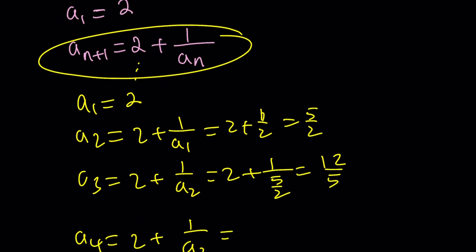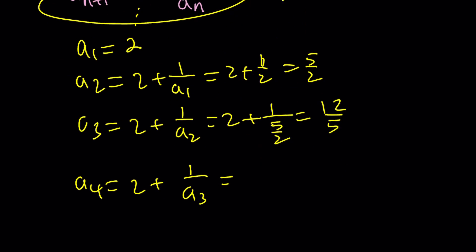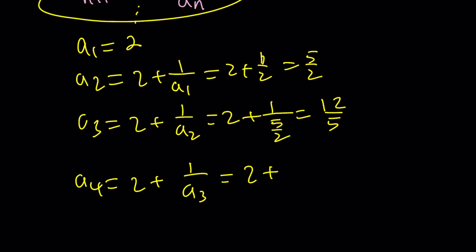And a sub 4 is just going to be 2 plus 1 over a sub 3 by definition. Again, I'm just using the definition because here n is actually supposed to be greater or equal to 1. And that's an integer. And now we have 2 plus 1 over 12 over 5, which is 5 over 12. And when you add the 2, you're going to get 29 over 12. Great.